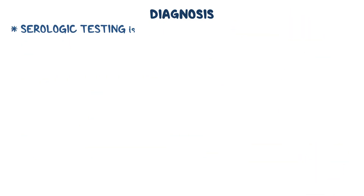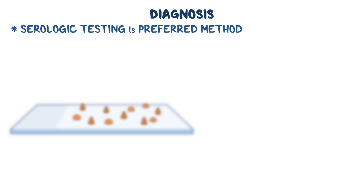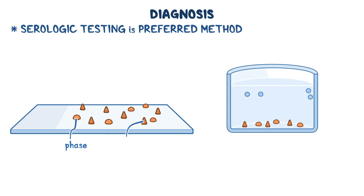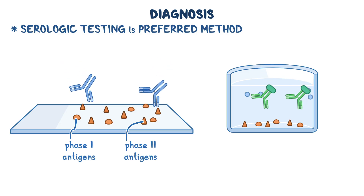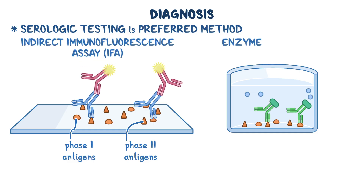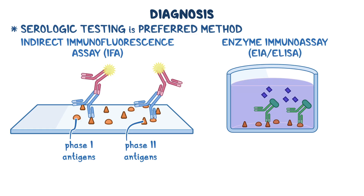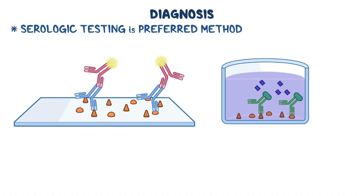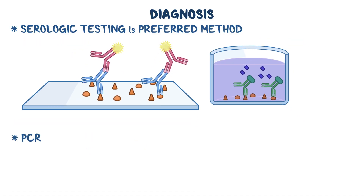Serologic testing is the preferred method for diagnosis. Coxiella burnetii expresses two types of antigens called phase 1 and phase 2 antigens, which lead to antibody production in the body. Detection of these specific antibodies using indirect immunofluorescence assay (IFA) or enzyme immunoassay — also known as EIA or ELISA — can be used to confirm infection with C. burnetii. Polymerase chain reaction, or PCR, is another test that can be done, which will directly identify bacterial DNA.